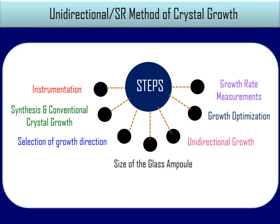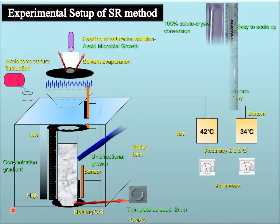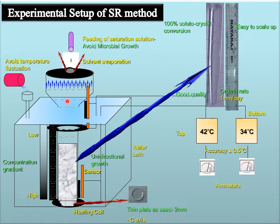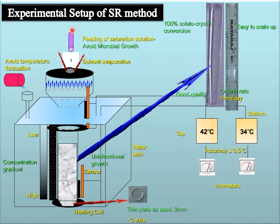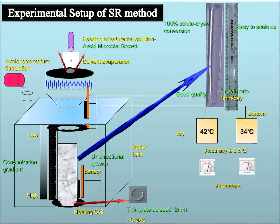Unidirectional or Shankar Narayanan Ramaswamy method of crystal growth involves different steps for uniaxial growth. In the experimental setup: place an ampoule inside a water bath, place a seed crystal of 2 mm at the bottom of the ampoule, set 42°C at the top and 34°C at the bottom. Feed the saturation solution, avoid microbial growth and temperature fluctuations. 100% of solute can be converted into crystal, with a growth rate of 1 mm per day, and it is easy to scale up.